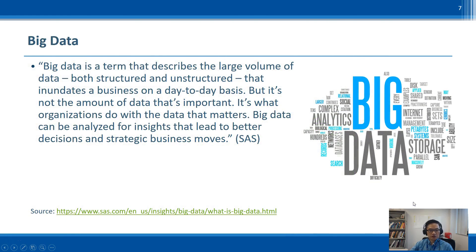Talking about big data, I want to provide a quick introduction. What is big data? A common sense answer would be a lot of data, which is not wrong. The AI in Person of Interest has to collect and process a huge amount of data in different types and formats coming from many sources in real time, requiring a supercomputer to store and process it promptly. The SAS Institute defines big data as a large volume of data, both structured and unstructured, that inundates a business on a day-to-day basis. But it is not the amount of data that matters — it is what organizations do with the data.